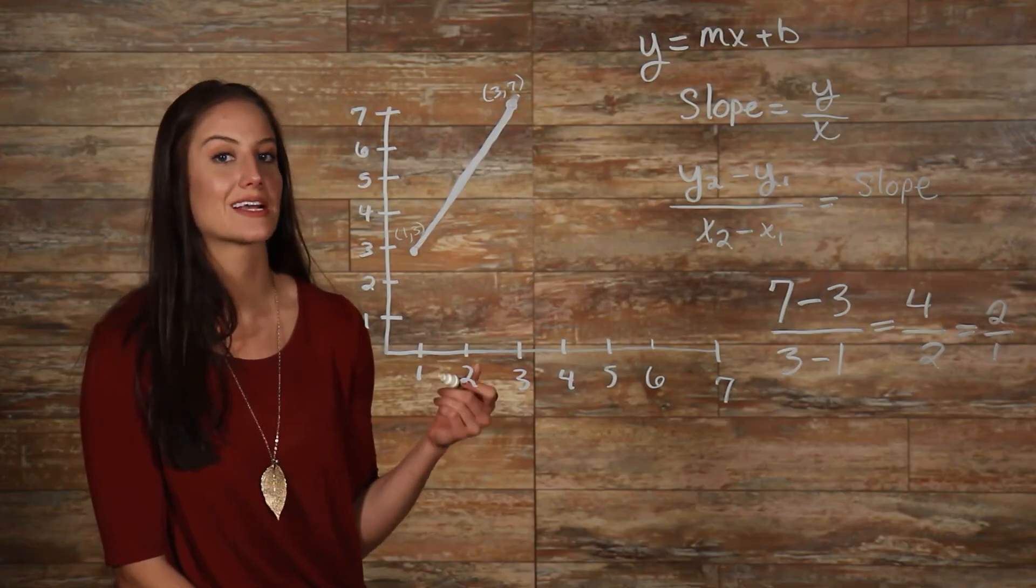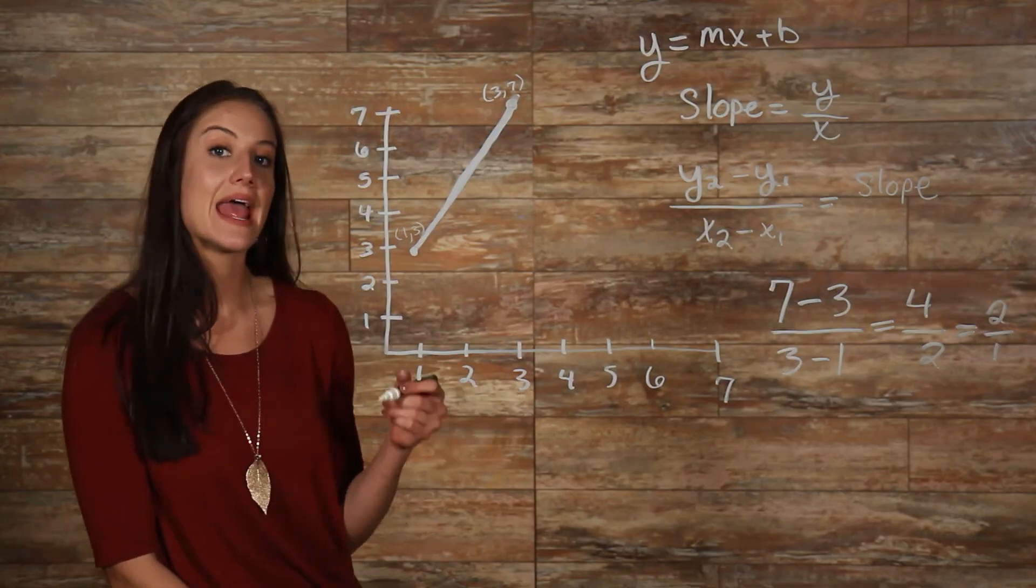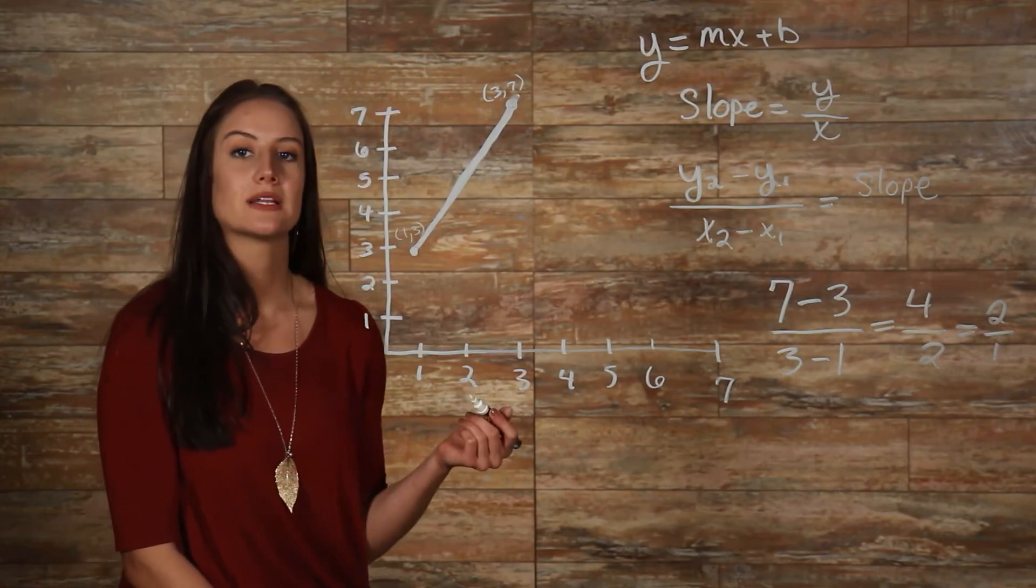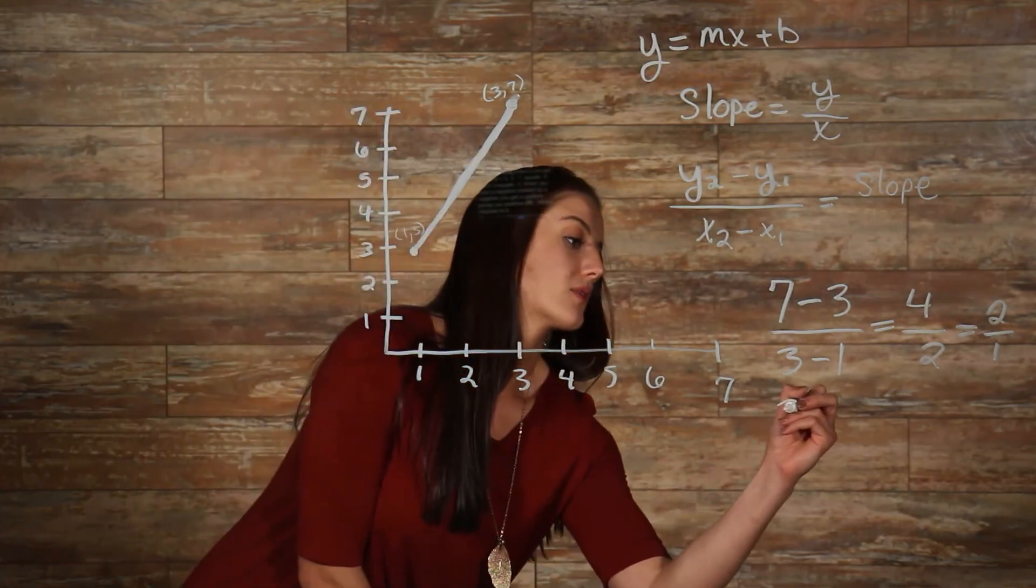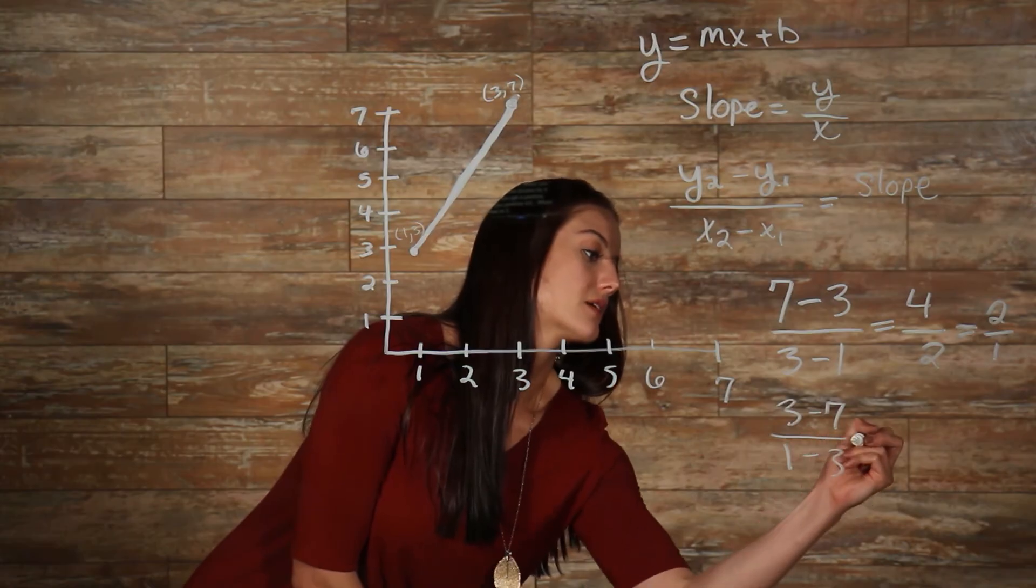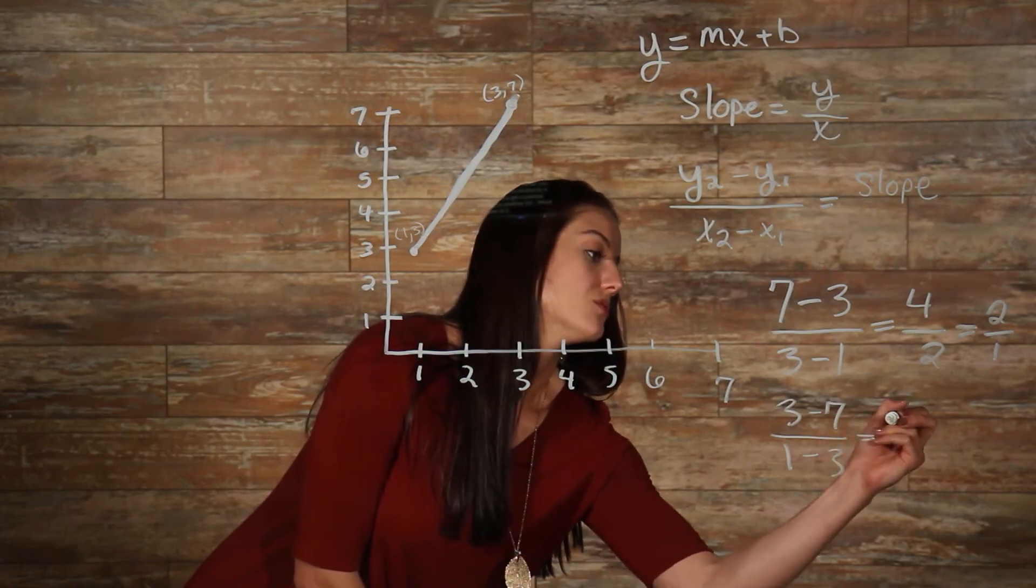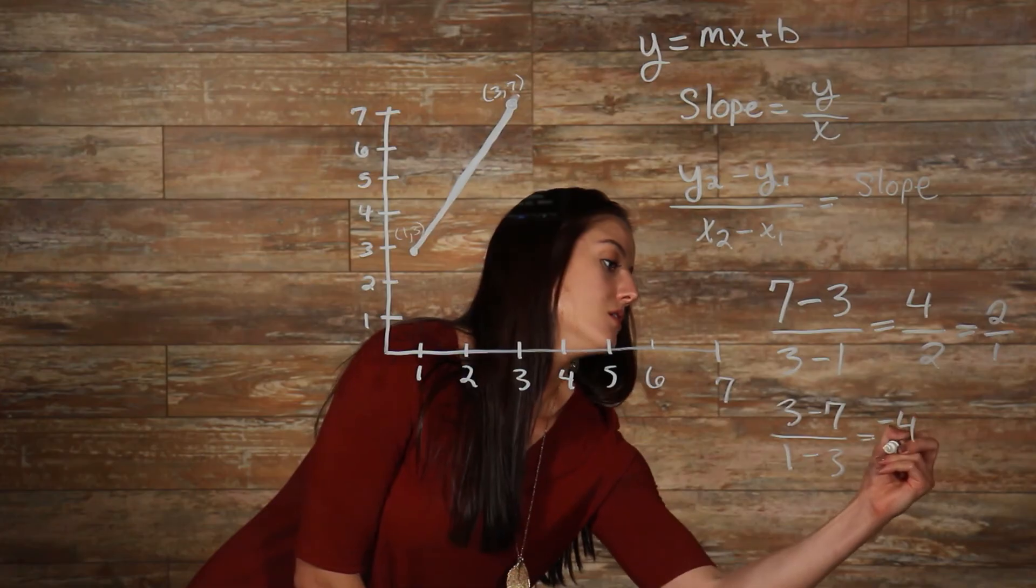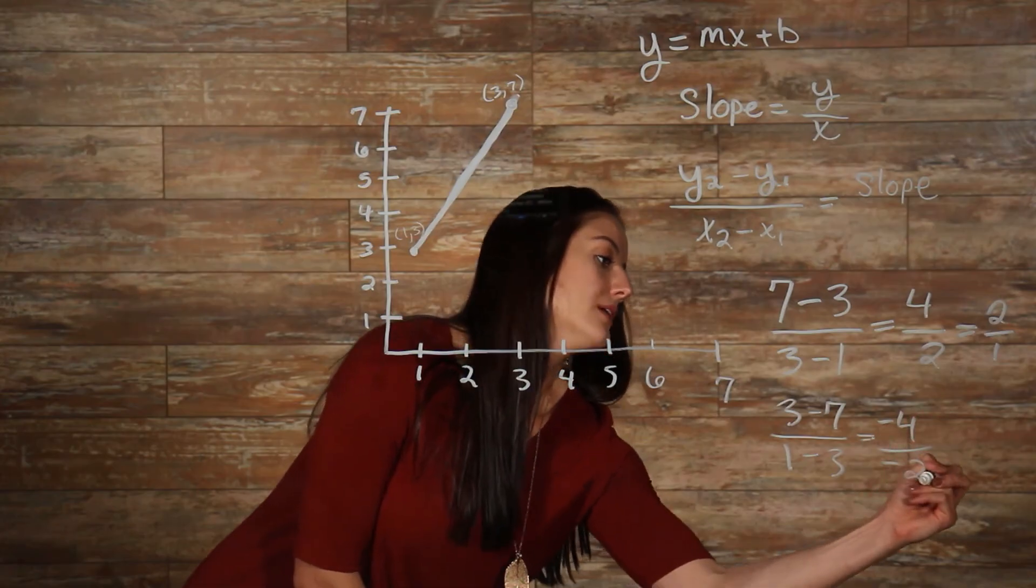So, let's make 1 3 x2, y2, and 3 7 x1, y1. When we plug them in, we get 3 minus 7 over 1 minus 3 is equal to negative 4 over negative 2.